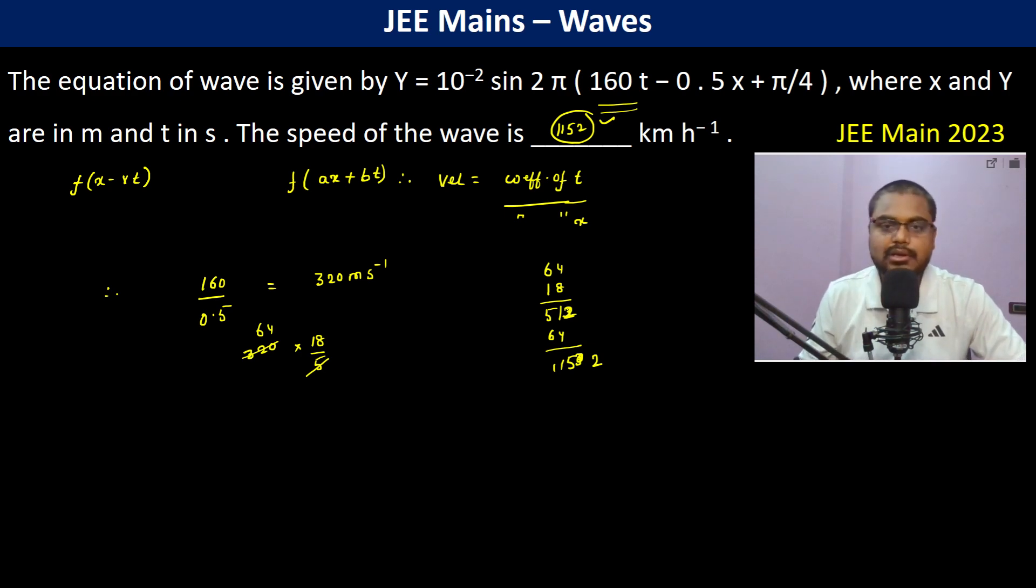So just take care that whenever an equation is given, we have to make sure that it comes in this form, or you can remember this: velocity becomes coefficient of t divided by coefficient of x. Thank you.